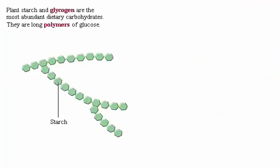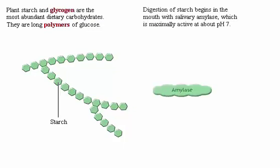Plant starch and glycogen are the most abundant dietary carbohydrates. Carbohydrates are long polymers of glucose. Digestion of starch begins in the mouth with salivary amylase, which is maximally active at about pH 7.